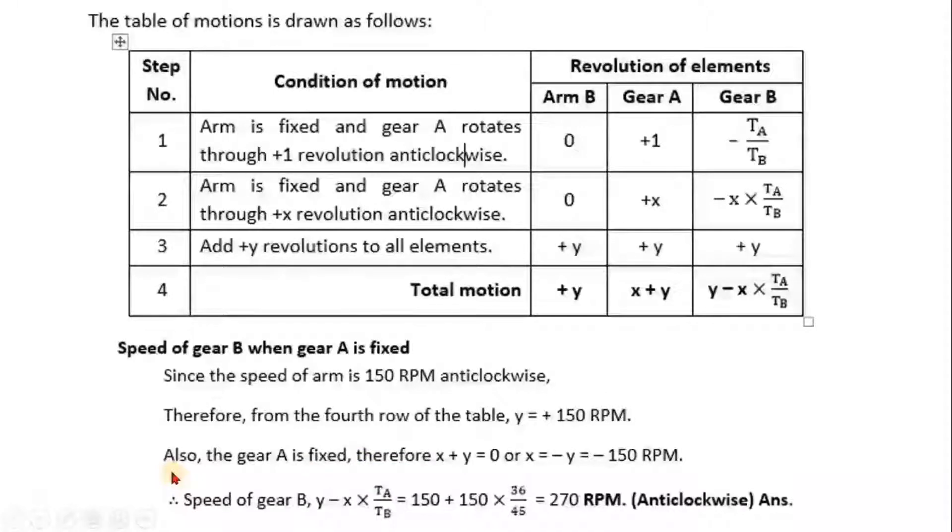Also the gear A is fixed, therefore x + y will be 0. So we can say x will be equal to -y, that is nothing but -150 RPM.